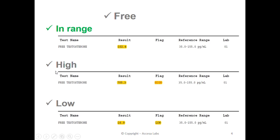Now we will look at a high result. Once again, we will look under the result header for our numerical result. This report has a result of 705.3. You may also notice a high notation under the flag header. Based on Quest Diagnostics reference range shown here, any result above 155 represents a high result.